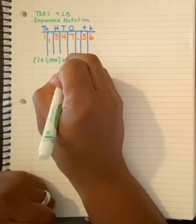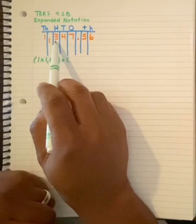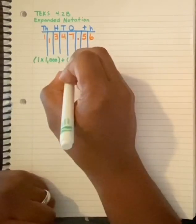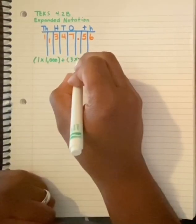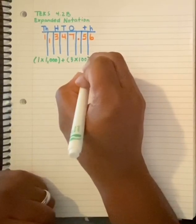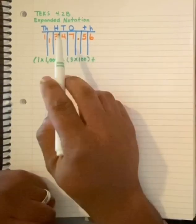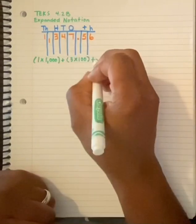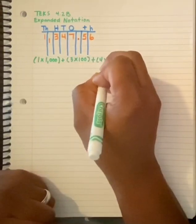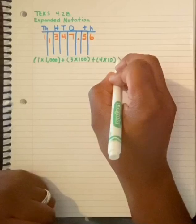Plus, and the hundreds is a three. Three groups of one hundred. Plus, four groups of ten. Plus.